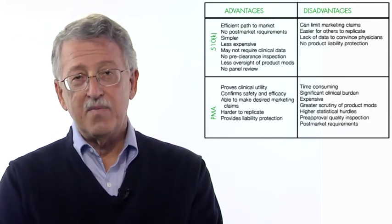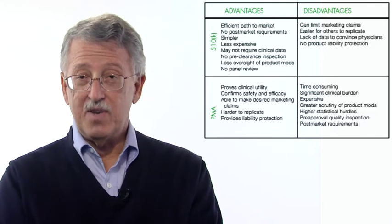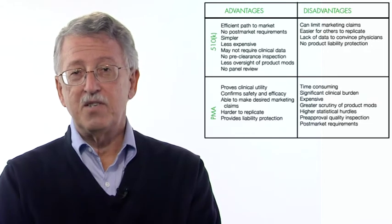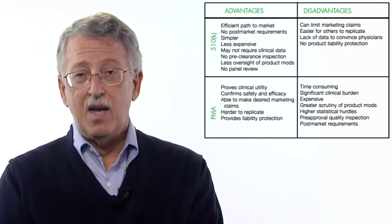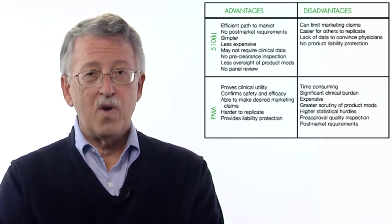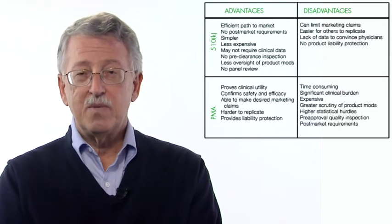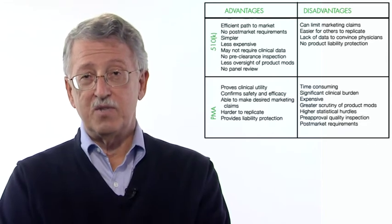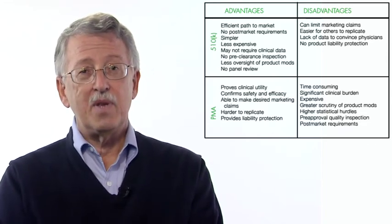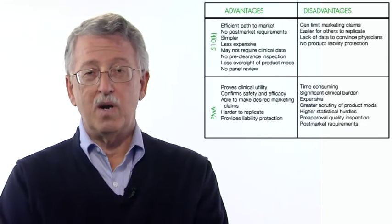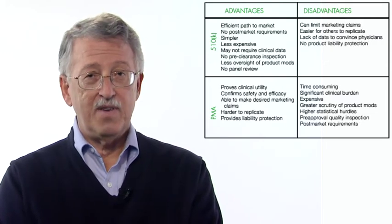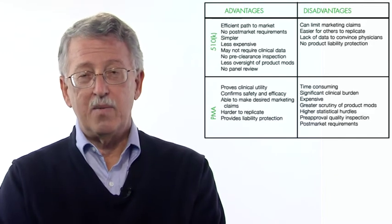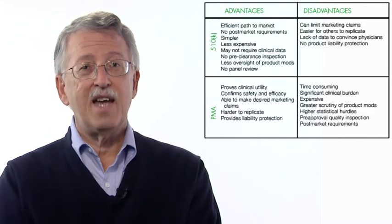On the other hand, the PMA takes a longer time to get through the FDA. It usually requires a bigger study. Application fees are higher. The type of requirements when you're changing the product are more rigorous for a PMA. The type of data and information that goes into a PMA is significantly more than what's required for a 510K. Higher statistical hurdles, for example, more information about preclinical information, things of that sort.